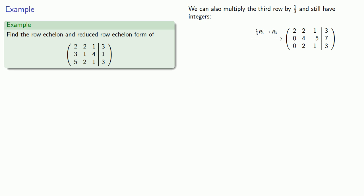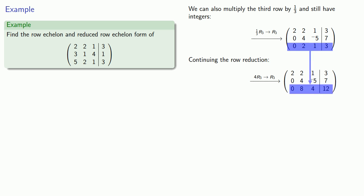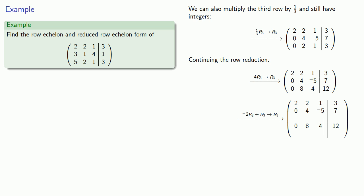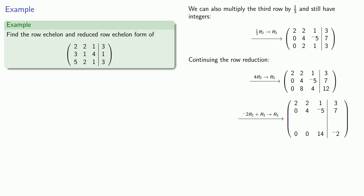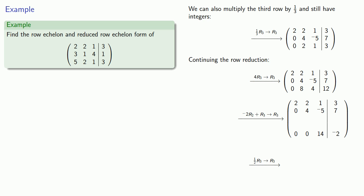Now we can continue the row reduction. Our second row pivot is 4, so we'll multiply the following rows by 4, which gives us a new second row 0, 8, 4, 12. If we multiply our second row by negative 2 and add it to the third row, that will get us a 0 in the entry below the pivot. So multiplying that second row by negative 2 gives us 0, negative 8, 10, negative 14. And adding it to the third row gives us a new third row 0, 0, 14, negative 2. While it's not absolutely necessary, it's useful to take advantage of the fact that every entry in the last row is divisible by 2, so we can multiply everything by one half to get a smaller set of entries.